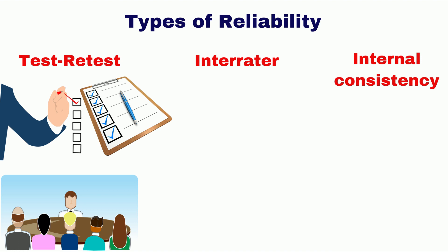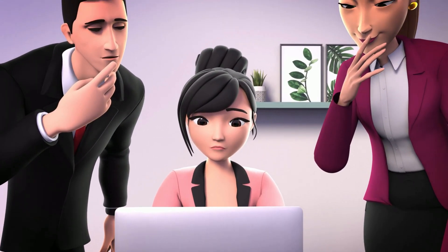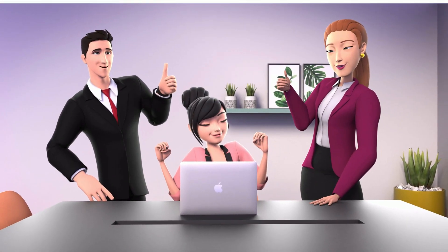The next is iterator, the consistency over researchers. For example, based on the similar criteria, if researchers produce the same results, this indicates high iterator consistency.